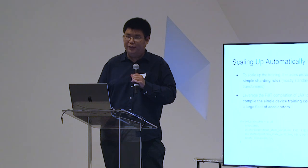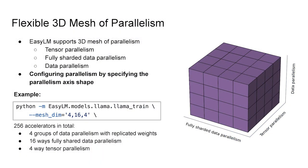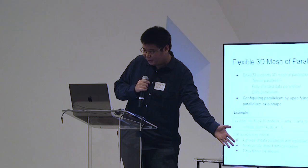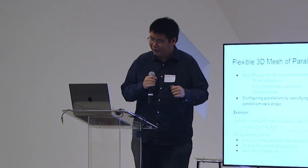After transforming into a scalable program, you then provide simple specifications of parallelism by providing three numbers representing the shapes of your accelerator configuration. EasyLM supports a flexible 3D mesh of parallelism, including a mixture of tensor parallelism, fully sharded data parallelism (also known as ZeRO stage 3), and normal replicated data parallelism. As shown in the example here, you simply provide three numbers, and you can scale up your training program to 256 accelerators — covering four data parallelism groups, 16-way fully sharded data parallelism, and four-way tensor parallelism.